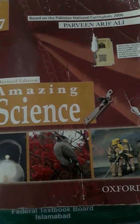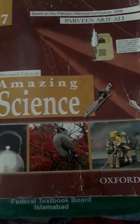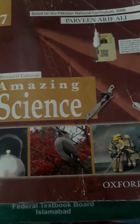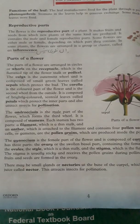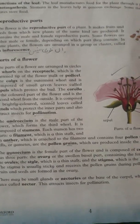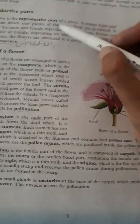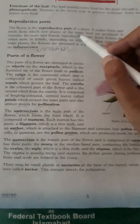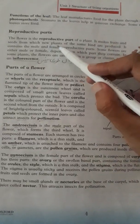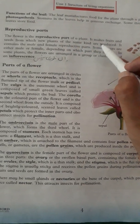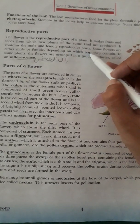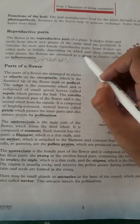I have told you that the reproductive part of a plant is the flower. Reproductive part means it will produce the next generation — the first filial generation or the next offspring. The flower consists of two parts: the male part and the female part. Open up your book to page number four. The flower is the reproductive part of a plant; it makes fruits and seeds from which new plants of the same kind are produced. It contains the male and female reproductive parts; some flowers are either male or female depending on which part they contain.